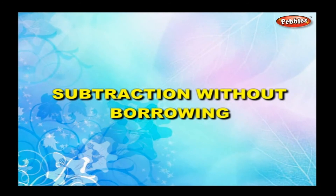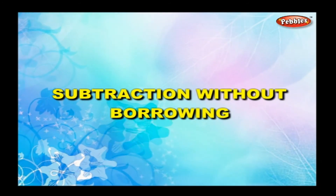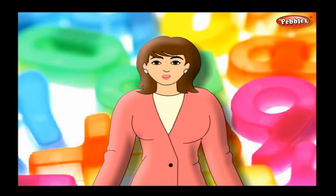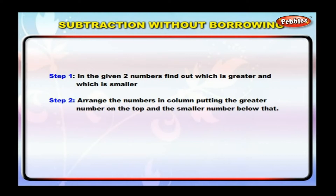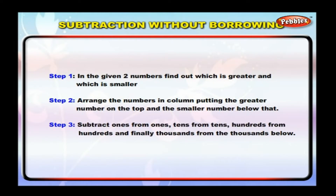Subtraction without borrowing. Let us first learn subtraction without borrowing. Step one: in the given two numbers, find out which is greater and which is smaller. Step two: arrange the numbers in a column, putting the greater number on top and the smaller number below. Step three: subtract ones from ones, tens from tens, hundreds from hundreds.